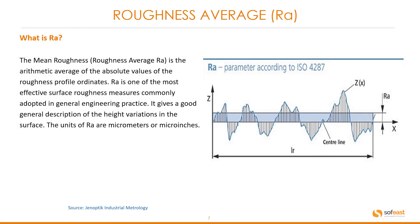We mentioned RA in the previous slide — so what is RA? The mean roughness, or roughness average, is the arithmetic average of the absolute values of the roughness profile ordinates. RA is one of the most effective surface roughness measures commonly used in general engineering practice. It gives a good general description of the height variations in the surface. The units of RA are micrometers and micro-inches.